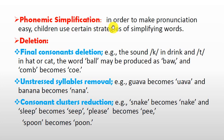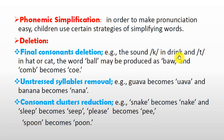Phonemic simplification is one of the key trends in later phonological acquisition. In order to make pronunciation easier, children use certain strategies to simplify words. The first strategy is deletion of final consonants. For example, the word 'ball' may be pronounced as 'ba', and 'calm' becomes 'ca'.